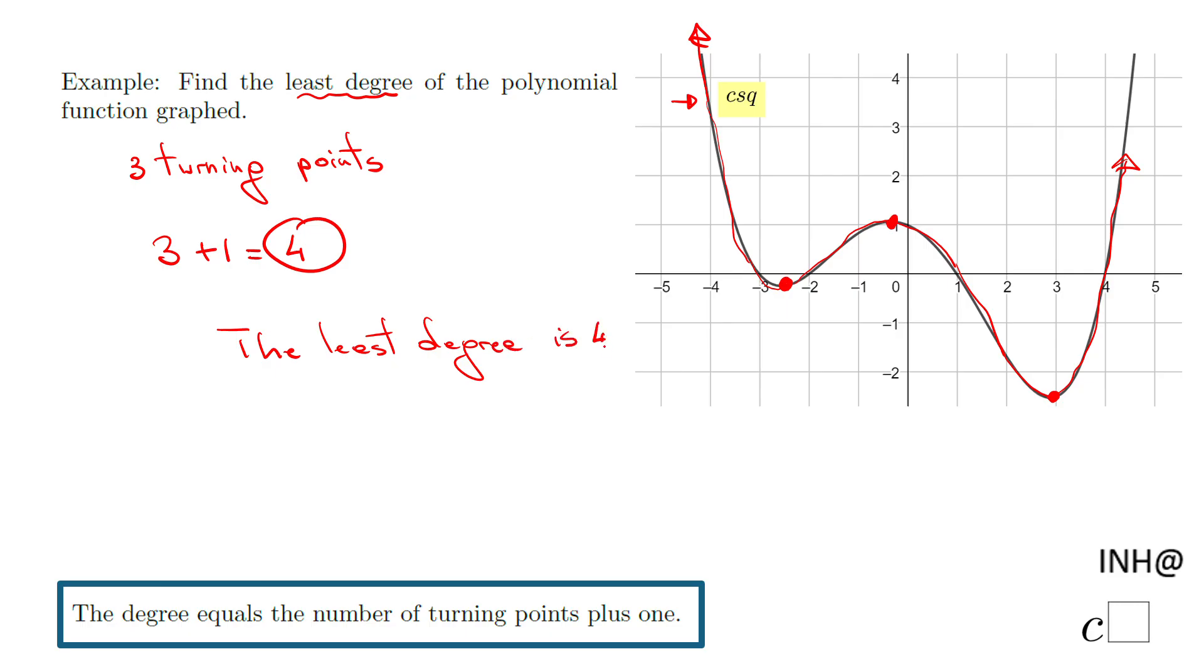Now, some people may want to look to the x-intercepts, and in this case, would be a good way to look and get the same degree. But the best way to look at this problem, and generally to polynomial functions, the graph of polynomial functions, is to see how many turning points you have. In this case, we have three. The least degree is four.